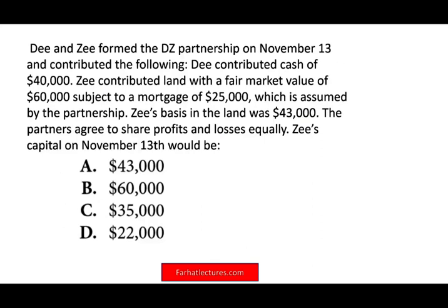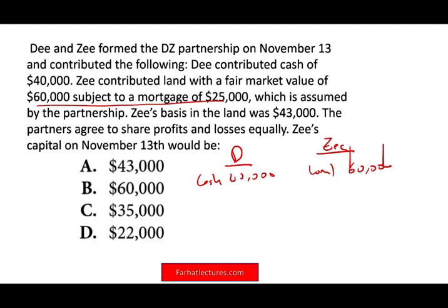D and Z formed the DZ partnership on November 13th. D contributed cash of $40,000. Z contributed land of $60,000, and that land was subject to a mortgage which is assumed by the partnership — so the partnership took over the mortgage. Z's basis in the land was $43,000, meaning that's how much she purchased it for. The partners agreed to share profits and losses equally.